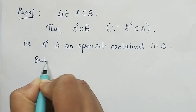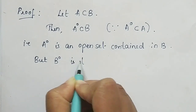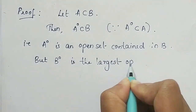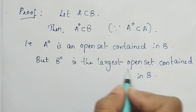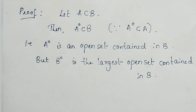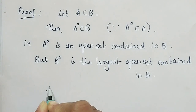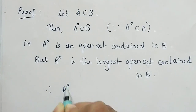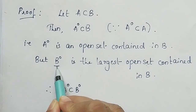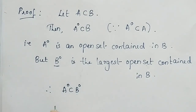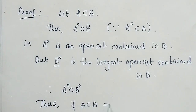We know that B interior is the largest open set contained in B — this is by the theorem proved in the last video, where A interior is the largest open set contained in A. Applying that here with B, we can write A interior is a subset of B interior, because B interior is the largest one. Thus whenever A is a subset of B, it implies A interior is a subset of B interior.